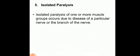The last category is isolated paralysis, which occurs when one or more muscle groups are affected due to disease of a particular nerve supplying the muscle, or a particular branch of that nerve. When one or more groups of muscles are paralyzed in this way, we use the term isolated paralysis. That concludes the last slide of today's class.